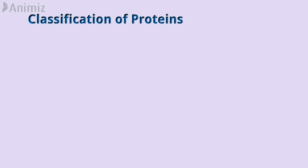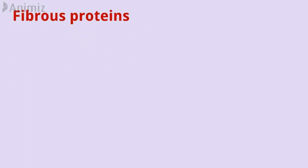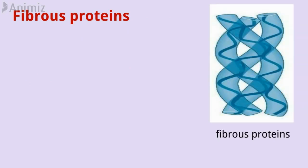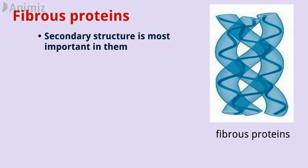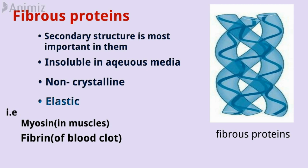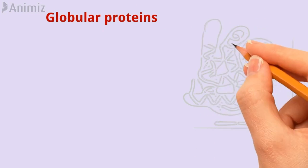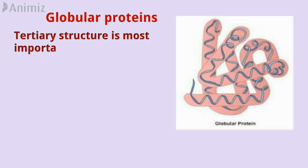Because of the complexity of structure and diversity of function, it is difficult to classify proteins in a single well-defined way. According to their structure, proteins are classified into fibrous proteins and globular proteins. Fibrous proteins consist of molecules having one or more polypeptide chains in the form of fibrils; the secondary structure is most important in fibrous proteins. They are insoluble in aqueous media, non-crystalline, and elastic in nature. They perform structural roles in cells and organisms; examples include myosin, fibrin, and keratin.